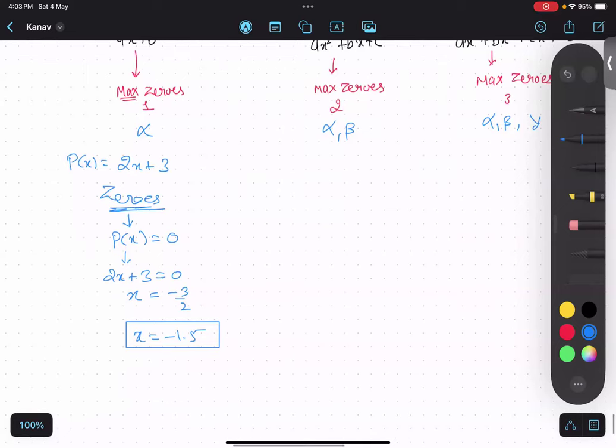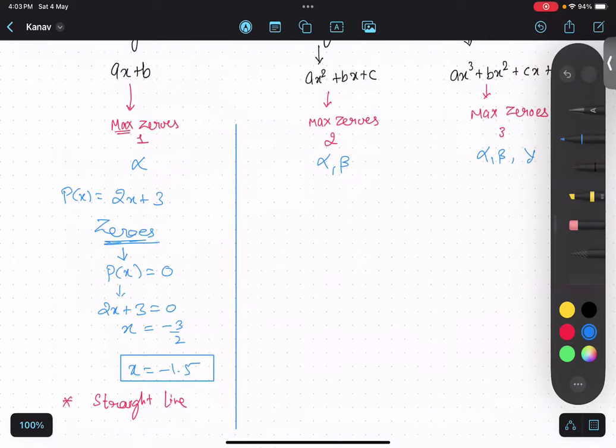So another important point, linear polynomial gives you a straight line. Okay. Let us focus on quadratic. Let's say a polynomial is g(x) equals 2x squared plus 3x minus 5. Something like this. Now let me ask you one thing.